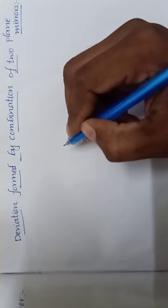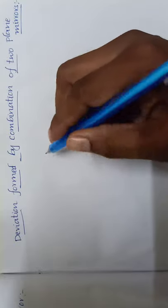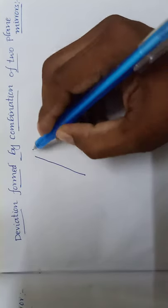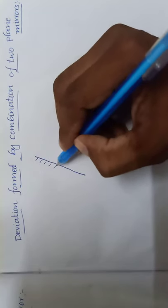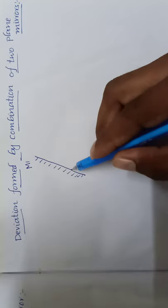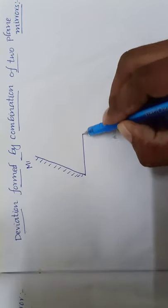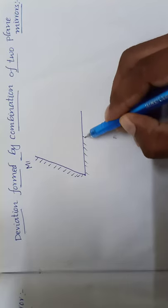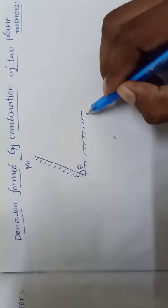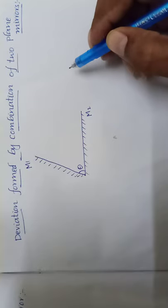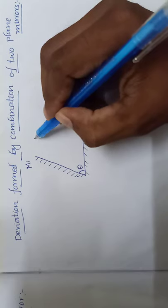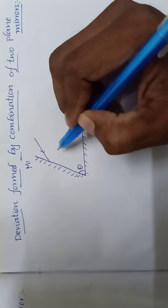Deviation formed by combination of two plane mirrors. Suppose here two plane mirrors are placed: this is one plane mirror, name it as M1 mirror one, and another mirror which is making angle theta between these two mirrors, this is mirror two M2. So now one incident ray is incident on mirror one with certain angle.